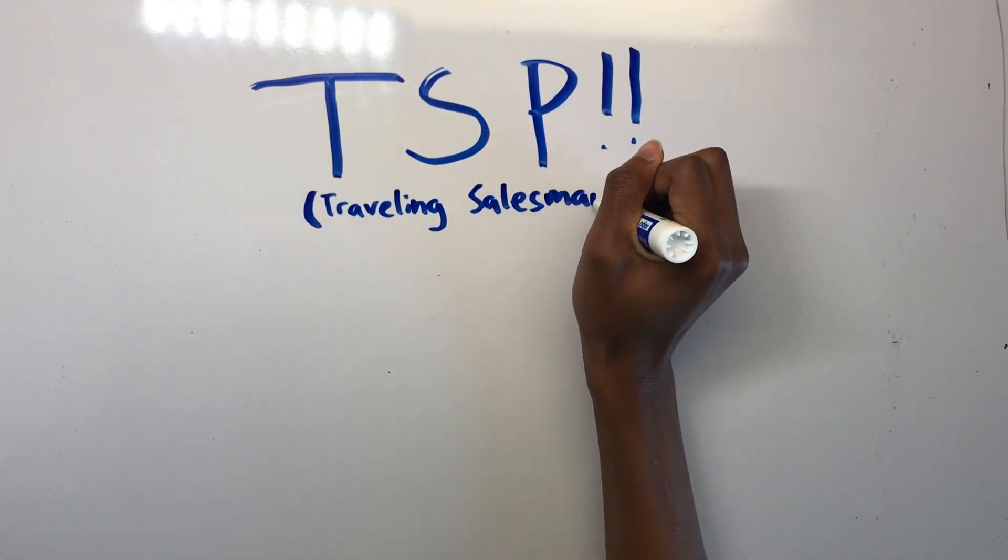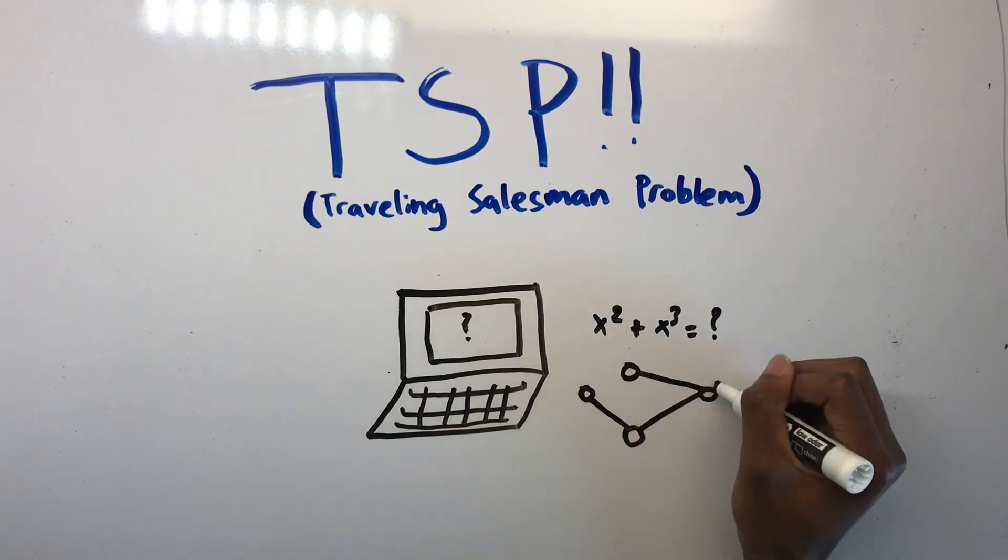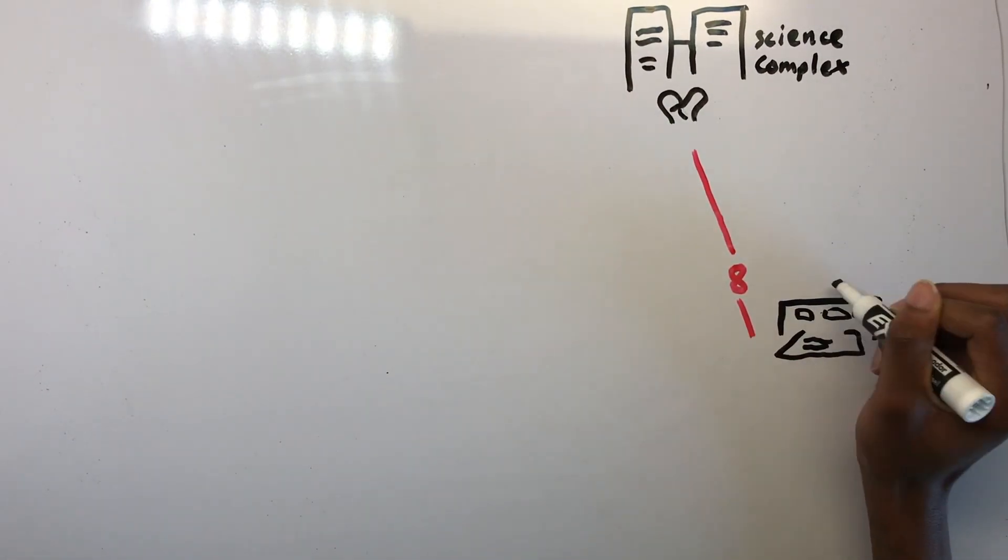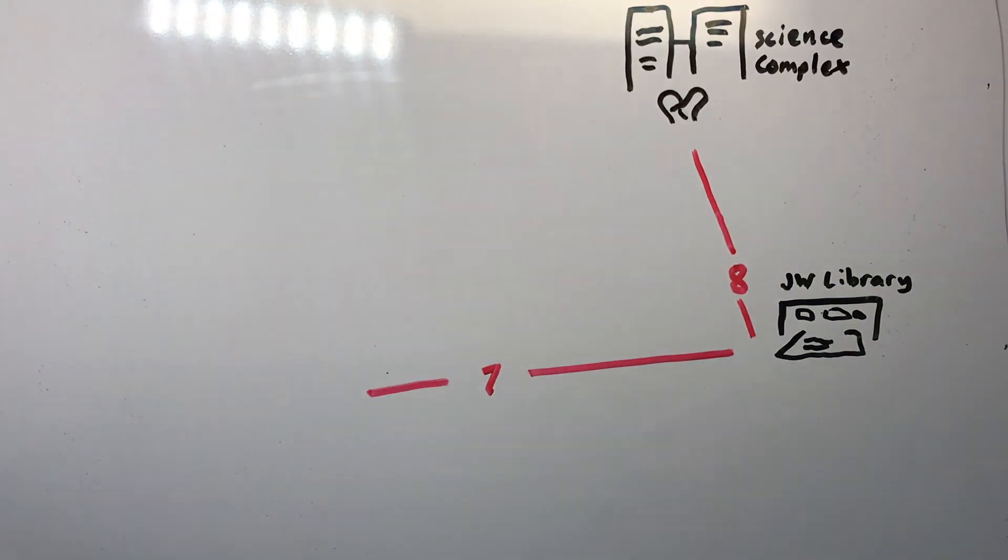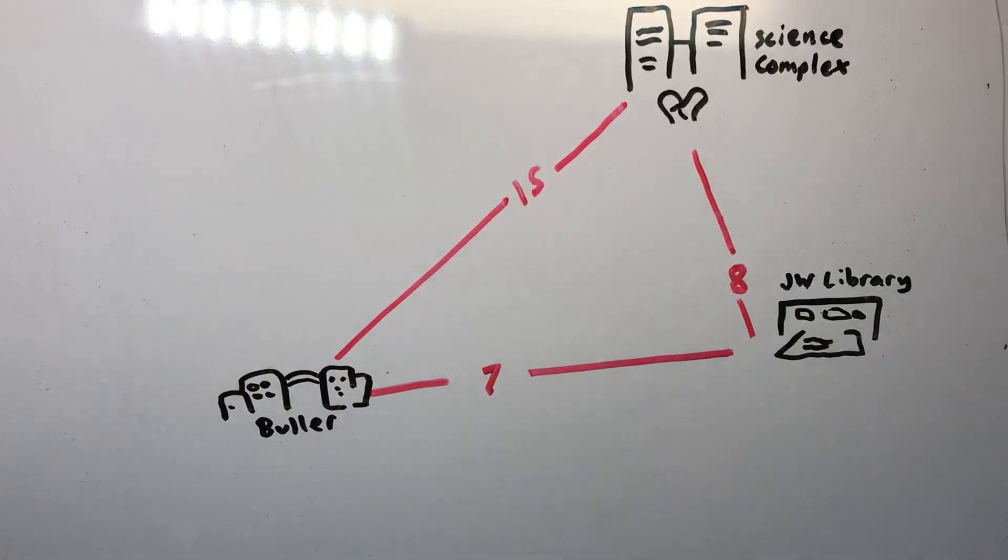The traveling salesman problem is one of the most intensively studied problems in computational mathematics. Given a collection of cities and the cost of travel between each pair of them, mainly the amount of miles between them or some other way of measuring, the traveling salesman problem, or TSP, is to find the cheapest way of visiting all of the cities and returning to your starting point.